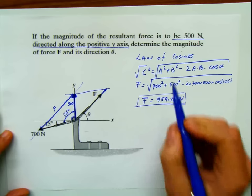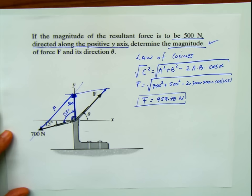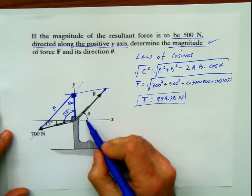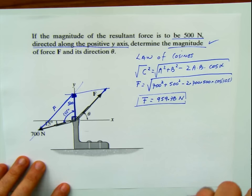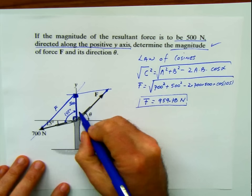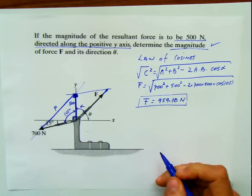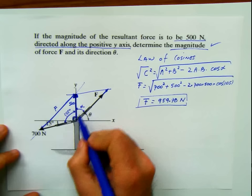That's the first part of the problem — magnitude — done. Now the second part says find its direction, this angle here. I can find that angle in different ways. The way I'm going to show you is finding this angle through another angle, which I'll call alpha. And of course, theta is going to be 90 degrees minus alpha. We're going to apply the law of sines.